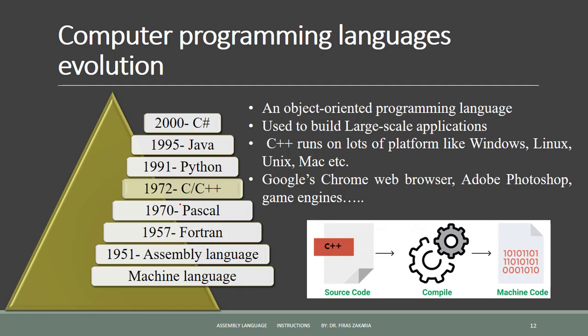C and C++ are compiled, object-oriented programming languages. Object-oriented programming helps to make maintainable and extensible programs, so large-scale applications can be built. It allows dividing complex problems into smaller sets using objects. C++ runs on many platforms like Windows, Linux, and Unix. You can use C++ to develop games, desktop applications, and operating systems. Notably, Google Chrome, Adobe Photoshop, and various game engines were all developed using C++.